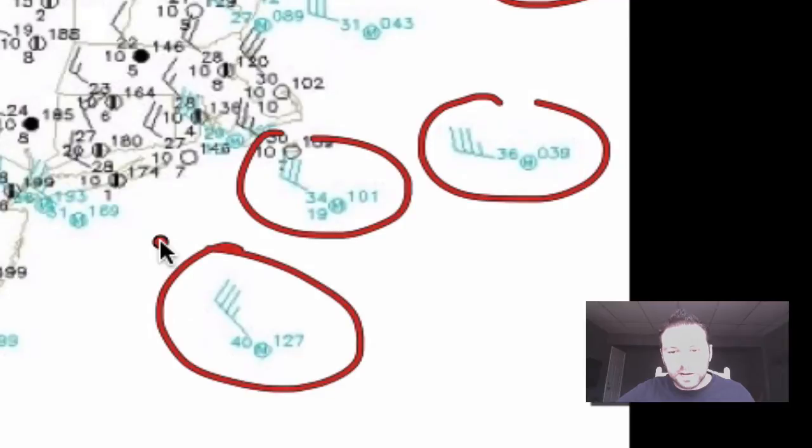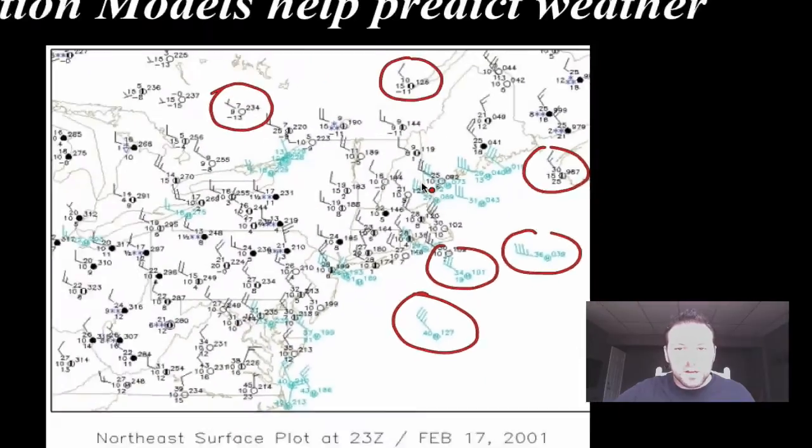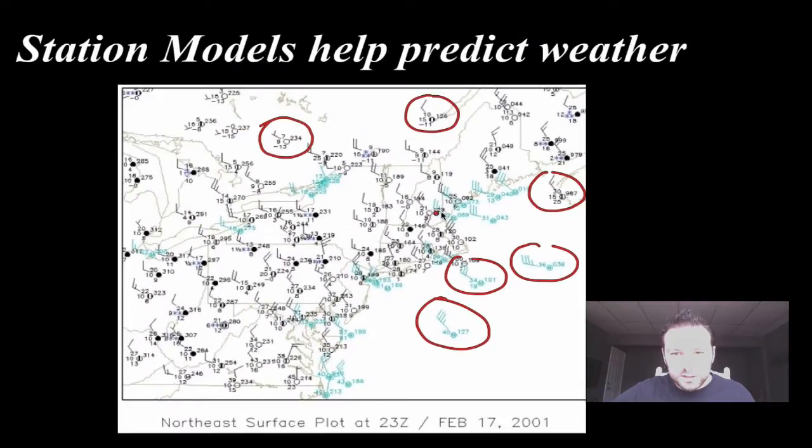A lot of station models. If I were to spend, I could spend quite a bit of time circling every single station model. So here's six station models that are represented on here. But each one of these, in these different areas, is giving us the weather conditions at the time of those that we're seeing here. So in this case, it would be February 17th, 2001. And we have the time, 23Z. And you can see that it's just of the northeast. So these are all the conditions of that time.